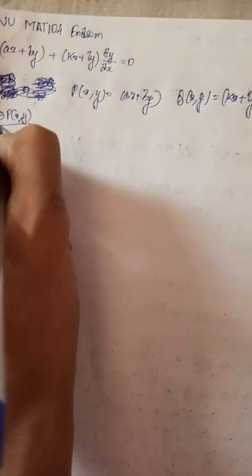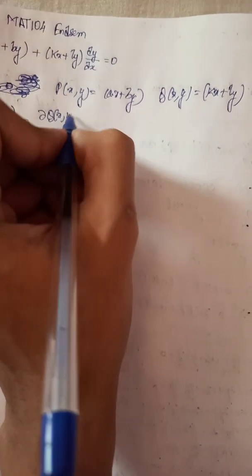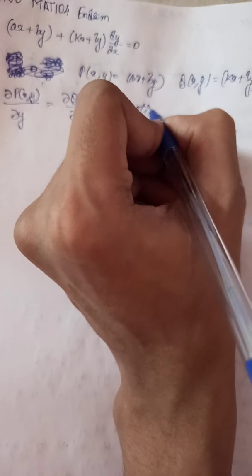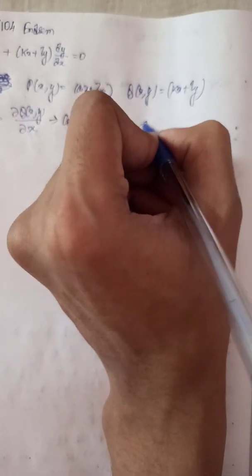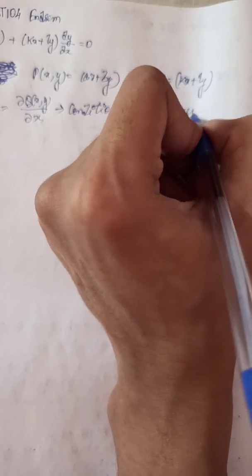Let us assume P(x,y) equals ax plus by, and Q(x,y) equals kx plus ly. The condition for exactness is: partial derivative of P(x,y) with respect to y equals partial derivative of Q(x,y) with respect to x. This is the condition for exactness.